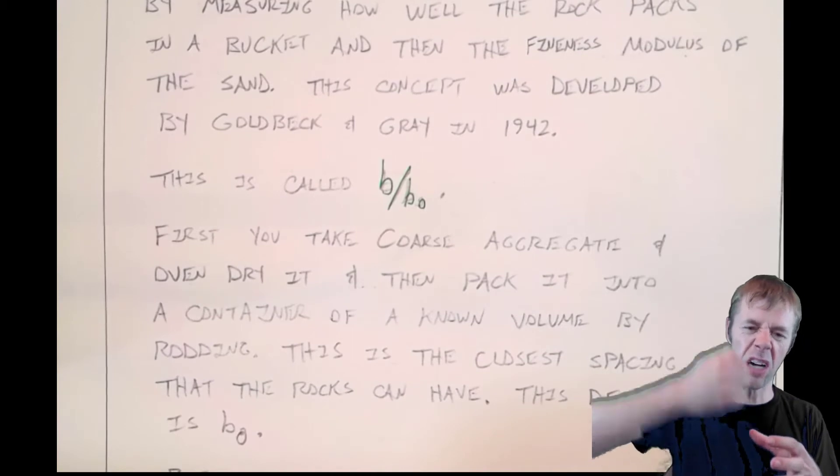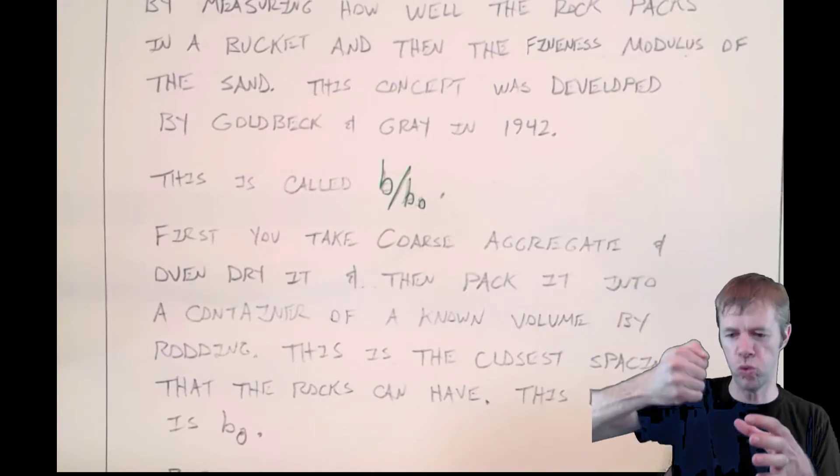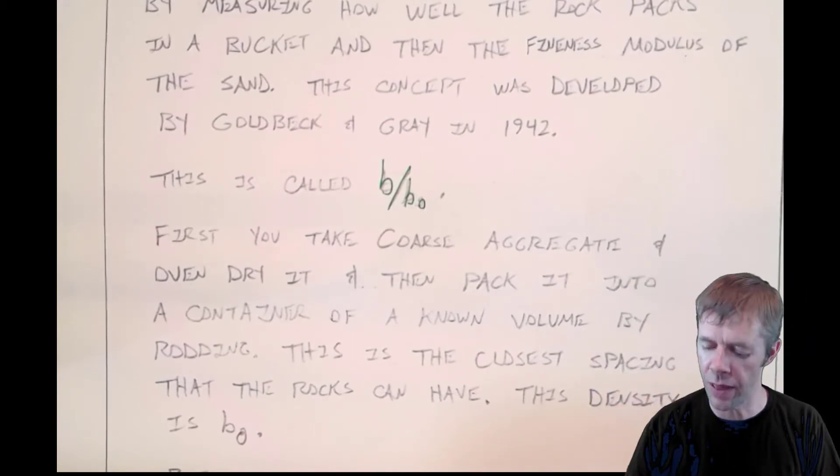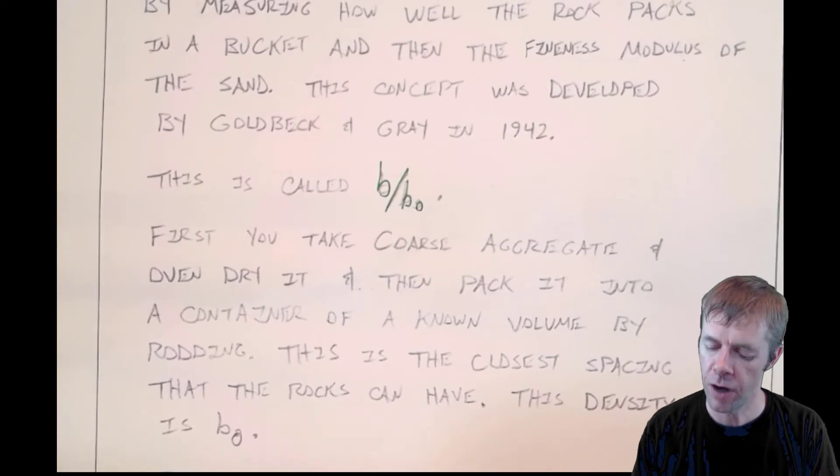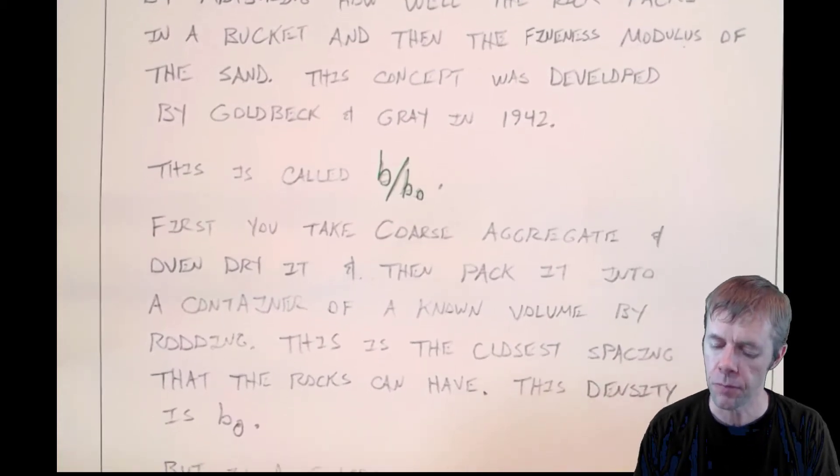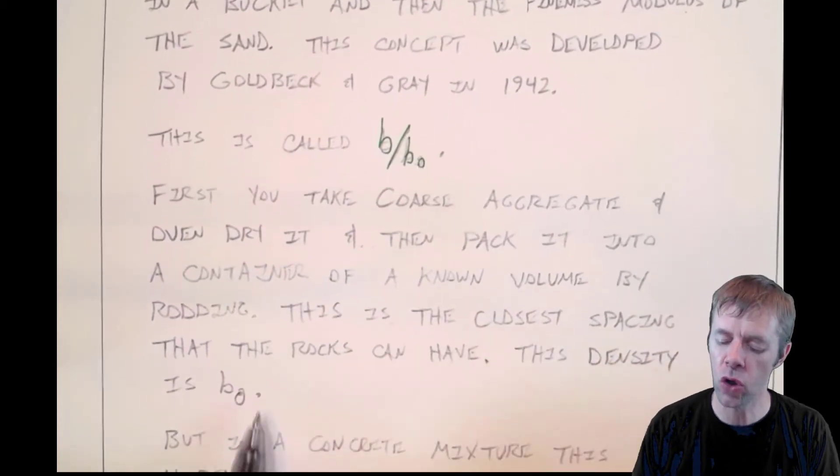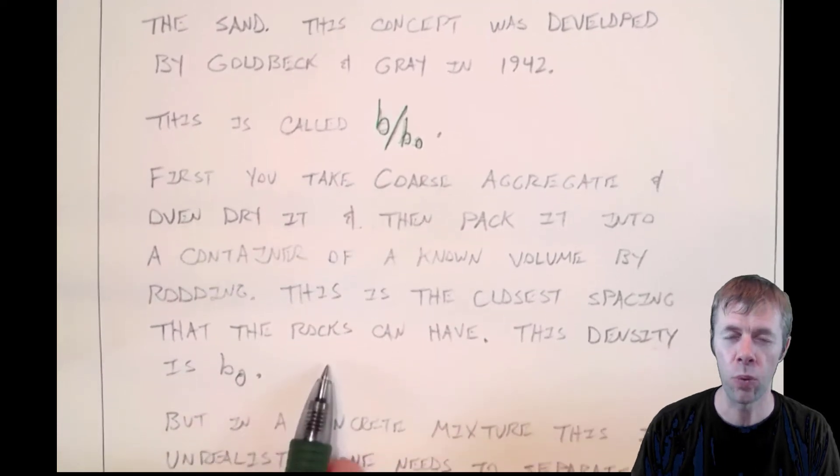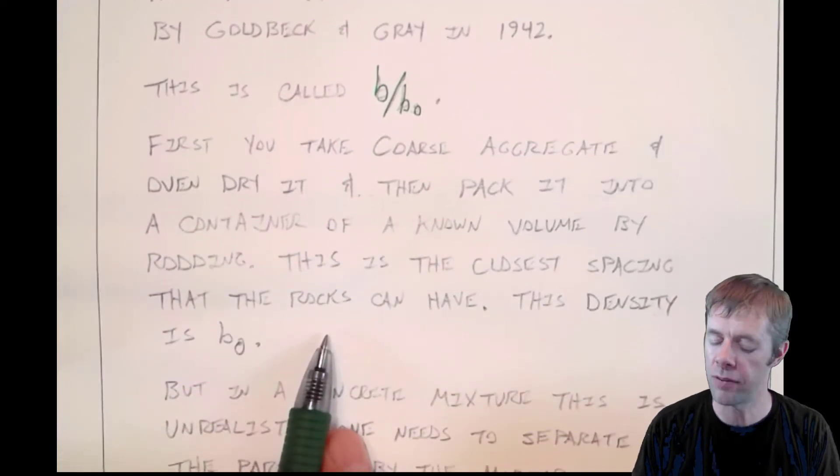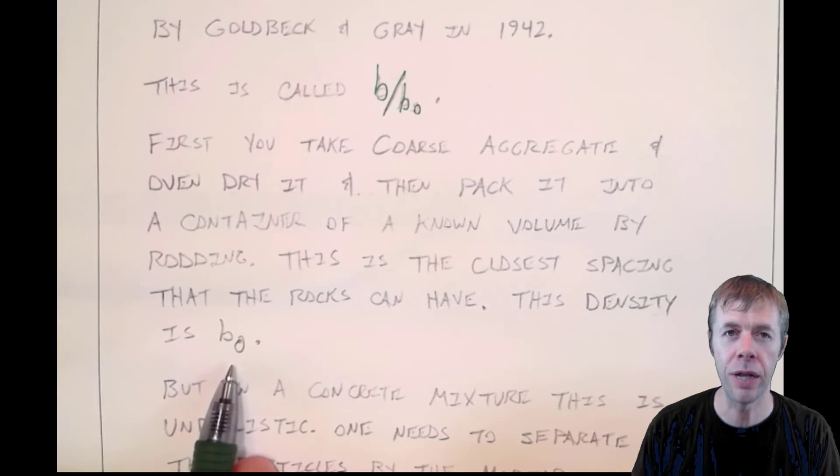Beat them down in that container of known volume. And this idea is this is the closest spacing that the rocks can ever possibly have. This density is going to be known as B naught.